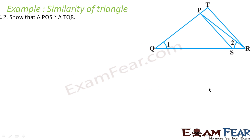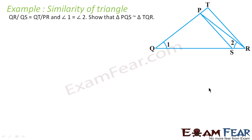The question says that QR/QS is equal to QT/PR, and angle 1 is equal to angle 2. We have to prove that triangle PQS is similar to triangle TQR.